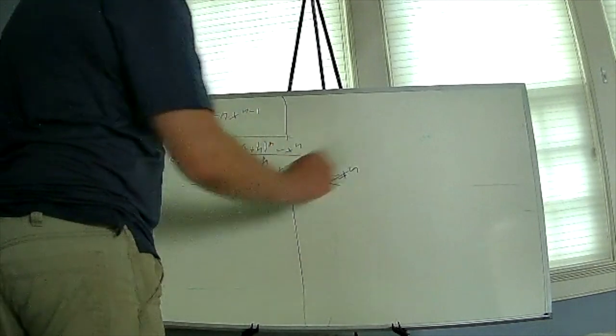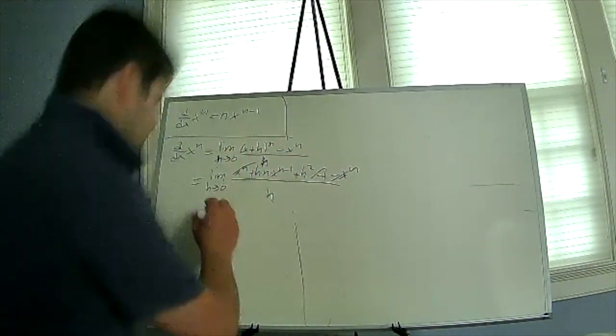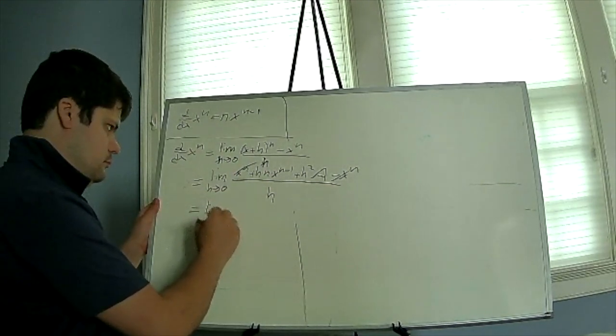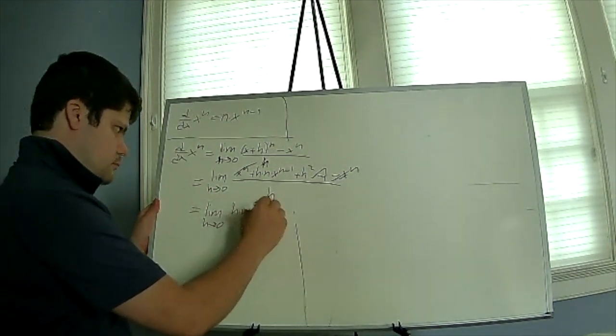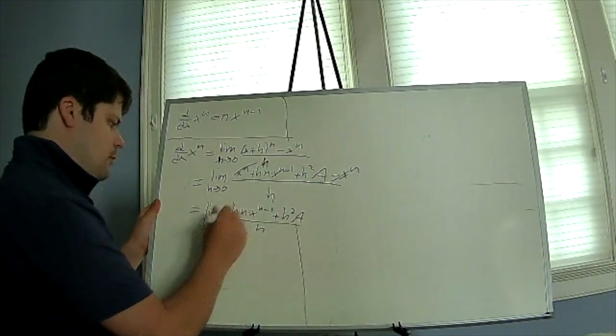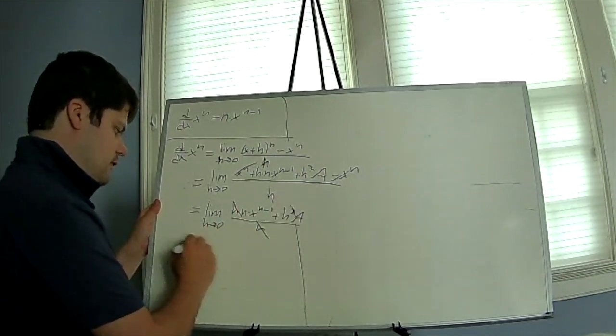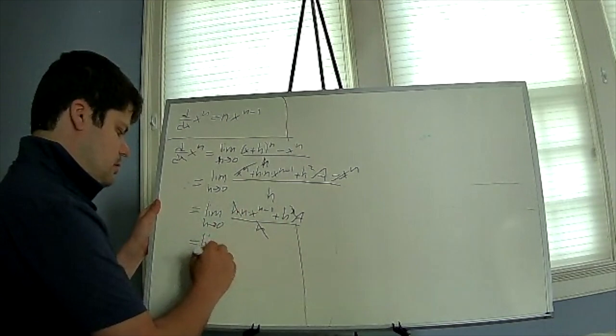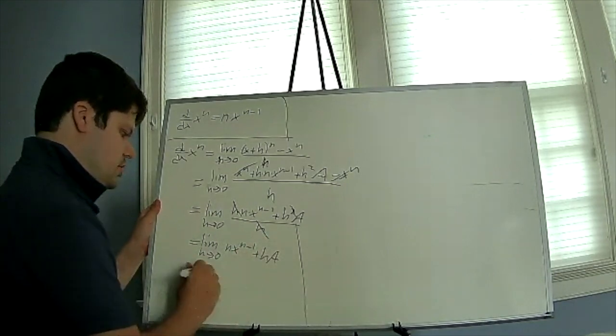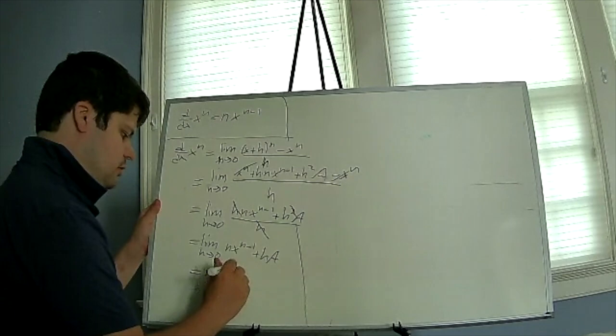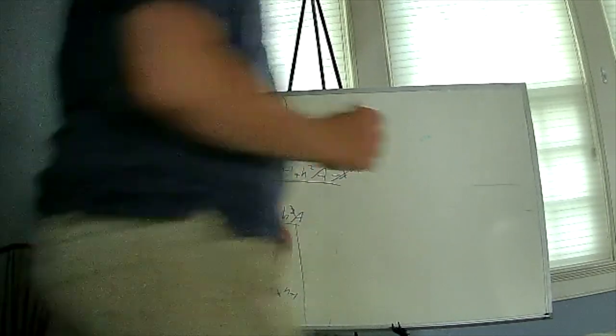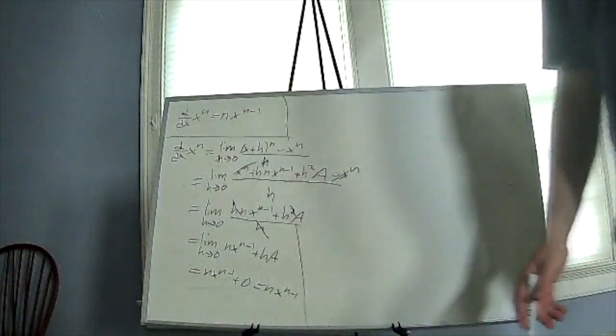Now, x to the n and negative x to the n cancel. So this leaves us with the limit as h approaches 0 of h times n times x to the n minus 1 plus h squared times a, all over h. Dividing out the common factor of h, we get that this equals the limit as h approaches 0 of n times x to the n minus 1 plus h times a, which equals n times x to the n minus 1 plus 0, or n times x to the n minus 1. So that's the proof. It's very straightforward, nothing really much to it.